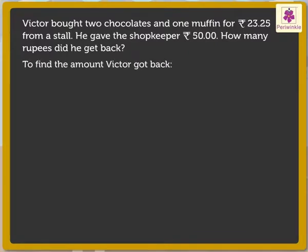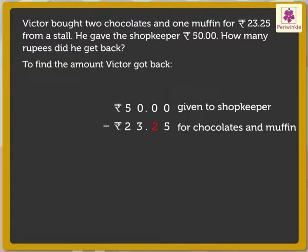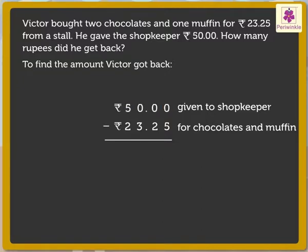Here, we will be subtracting 23.25 from 50.00, taking care that the dots separating the rupees and paise appear one below the other. So let's solve it. To be able to subtract, we need to regroup the number 5000 in 1000s, 100s, 10s and 1s. So 5000 is regrouped as 4000 plus 900 plus 9 tens plus 10 ones.